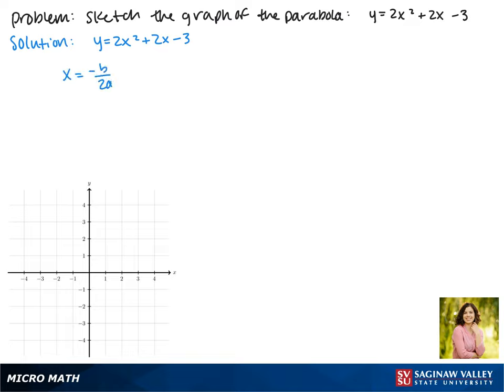We're going to use the vertex formula, which is negative b over 2a, which gives us negative 2 over 2 times 2. So the x value of our vertex is negative 1 half.